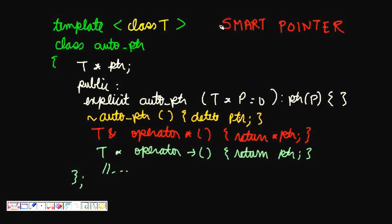A smart pointer is implemented as a template class. We define template<class T> and then class AutoPointer. Inside the class we have T* ptr, so it can hold a pointer to any type — built-in or user-defined. Then we write the constructor AutoPointer.